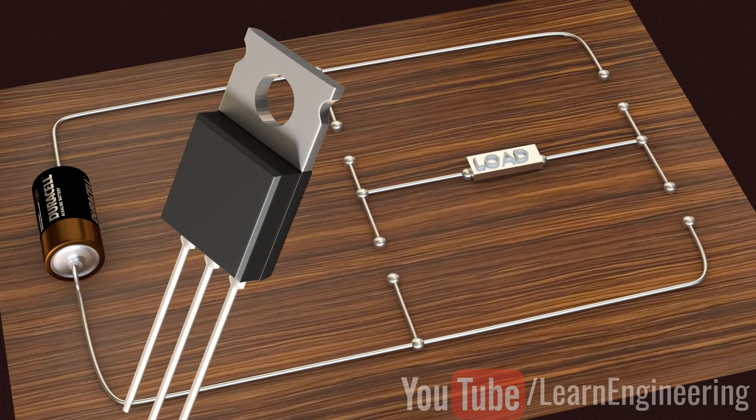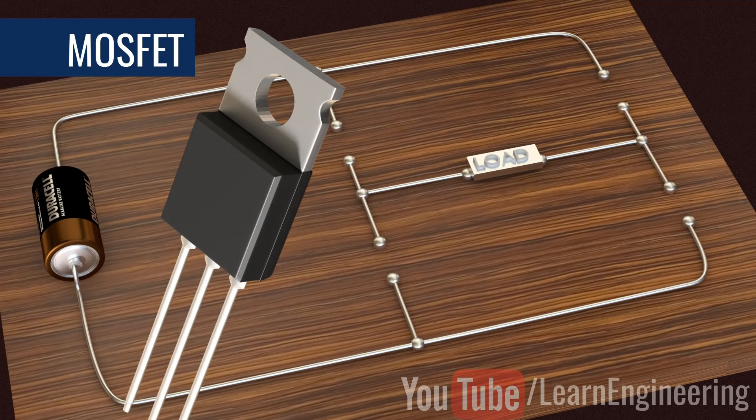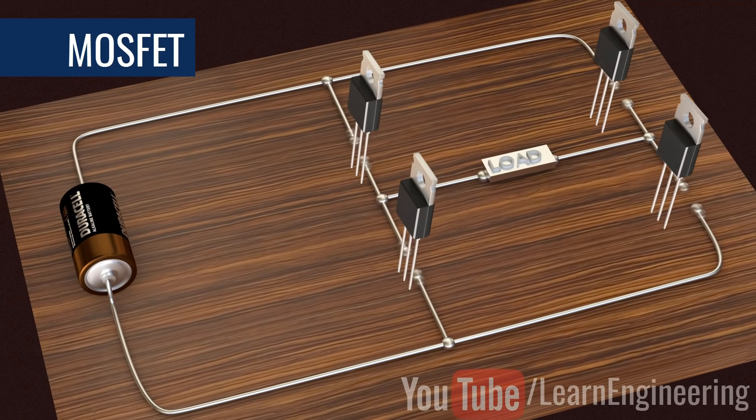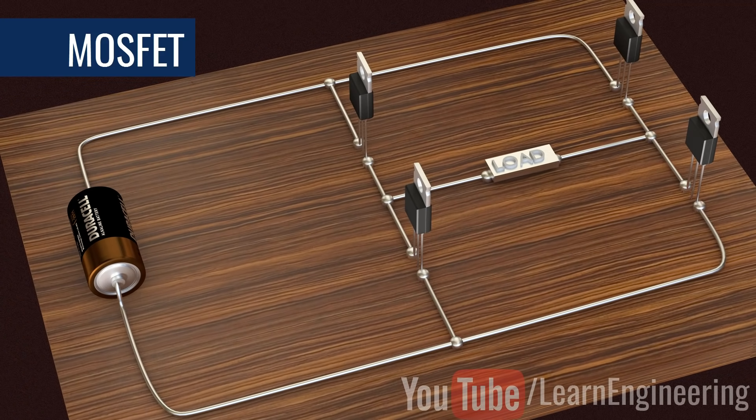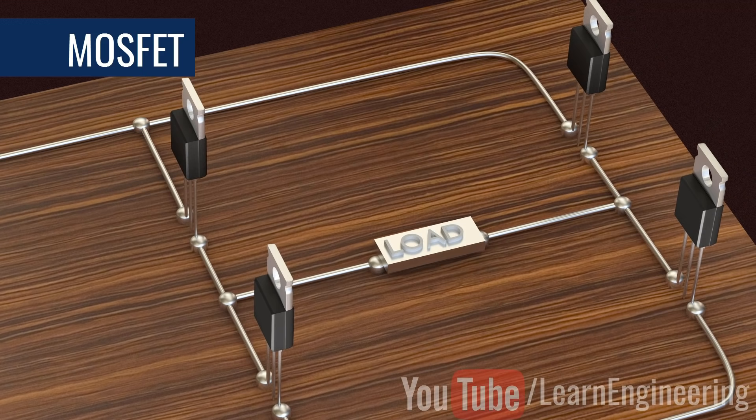We introduce semiconductor switches, such as MOSFET, for this purpose. They can turn ON and turn OFF thousands of times per second. With the help of control signals, we can turn transistors ON or OFF very easily.